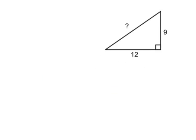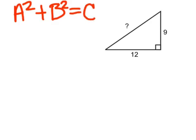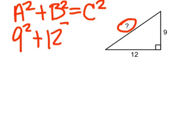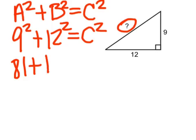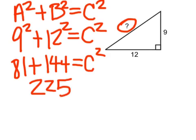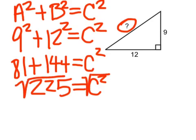Example number one. Who remembers the formula for the Pythagorean theorem? A squared plus B squared equals C squared. What are we solving for right now? C — we're solving for the hypotenuse. Plug in 9 for A, we'll plug in 12 for B. What is 9 squared? 81. What is 12 squared? 144. What is 81 plus 144? 225. What do we need to do now? Square root both sides.